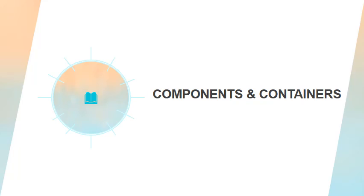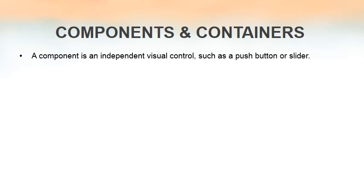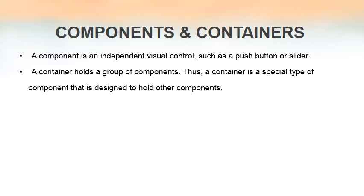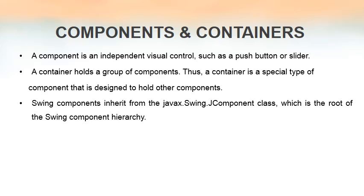Now we will discuss about components and containers in Swing. A component is an independent visual control such as a push button, radio button, checkbox, or text box. A container is also a component but it is capable of holding a group of components. Think of a container as a tray that we use at home to hold teacups, saucers, etc. Likewise, in Swing a container is a component capable of holding other components.